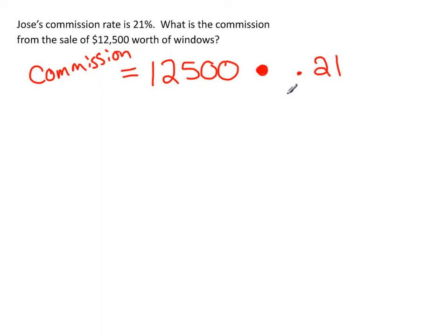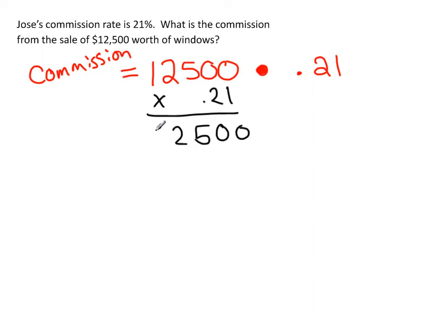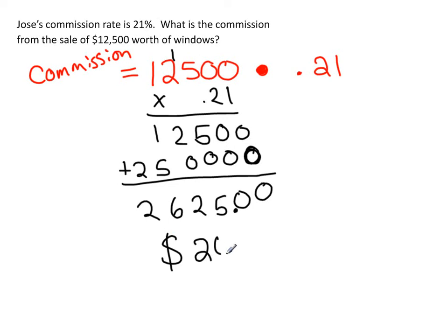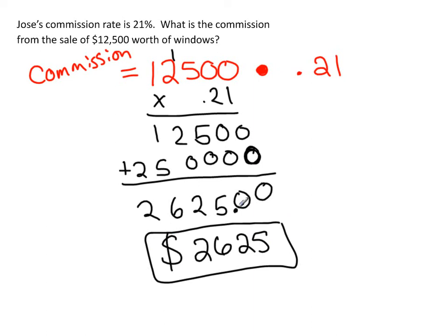Doing the multiplication vertically: one times each digit of 12,500, then two times each digit with a placeholder. Adding the partial products and placing the decimal two places in, Jose's commission is $2,625. That amount is added on to whatever base salary he may have — that's what he gets paid.